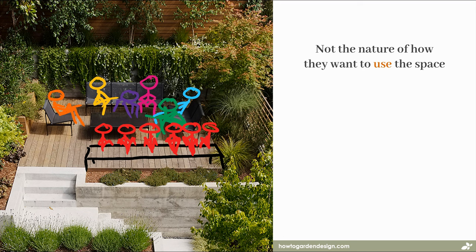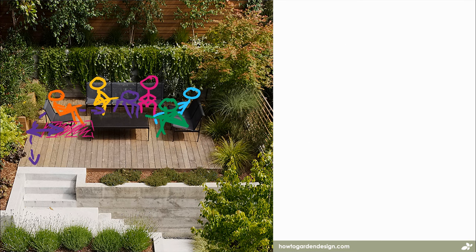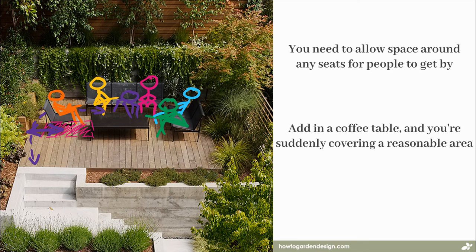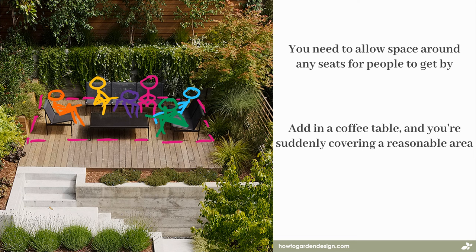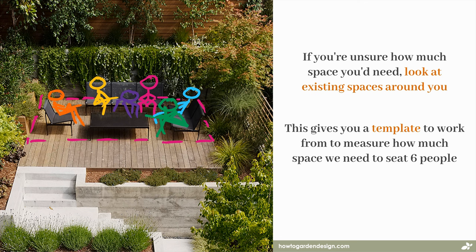But that's not the nature of how they want to use the space. Think about when you sit in a chair — the area you take up is more than the chair seat itself. If you have your legs out in front of you and room at the side for your arms and other people, and think about how often you move a chair in and out to allow people to pass behind. We are less likely to do that in an informal entertaining space, but just like a normal lounge room, you need to allow space around any seats for people to get by. Add in something like a coffee table to support drinks, food, books, and maybe feet, and you're suddenly covering a reasonable amount of area. Look at existing furniture and spaces around you — like the chairs in a lounge room — to get a ready-made template for how much space you need to seat six people and allow them to relax in relative comfort.